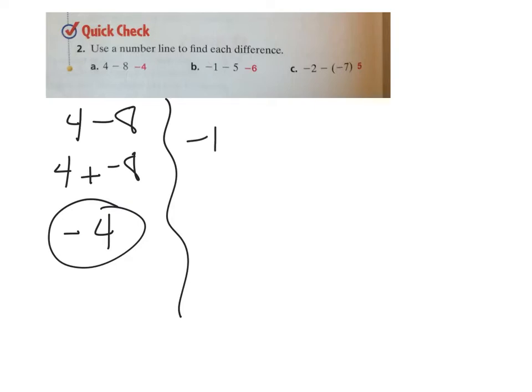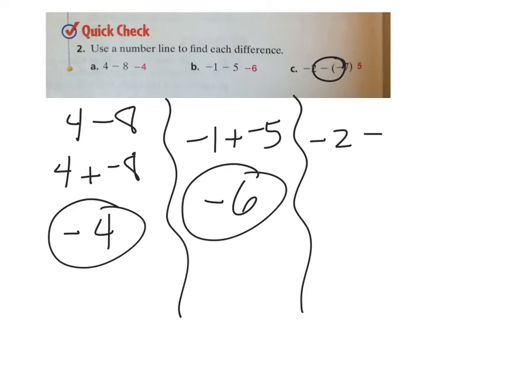Same thing here. Negative 1 minus 5 becomes negative 1 plus a negative 5. Same sign! Woohoo, finally. You add them, become 6, they're all negatives. And the last one, C here, leave that first number alone, and now these two - if you have two negative signs you can make them into plus, right? So I add the opposite - adding the opposite of negative 7 is positive 7.